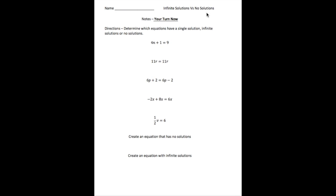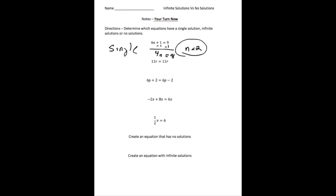Welcome back. Let's see how you did. For these problems, you had to determine which equations had one solution, infinite solutions, or no solutions. The first one: 4n plus 1 equals 9. If I solve it, take away 1 from both sides, we get 4n equals 8, so n equals 2. This has a single solution.